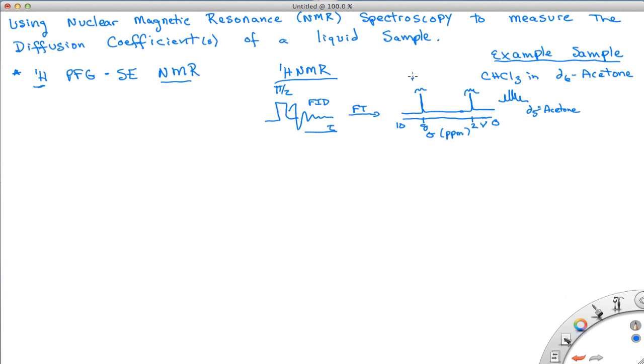If we looked at the fine structure of this, we would actually see a large peak, and then there would be two small peaks on either side of it, which are known as carbon satellites. This is due to the small amount of C13 chloroform that's at about 1% in there. That describes some of the fine structure of what you would see for this sample.